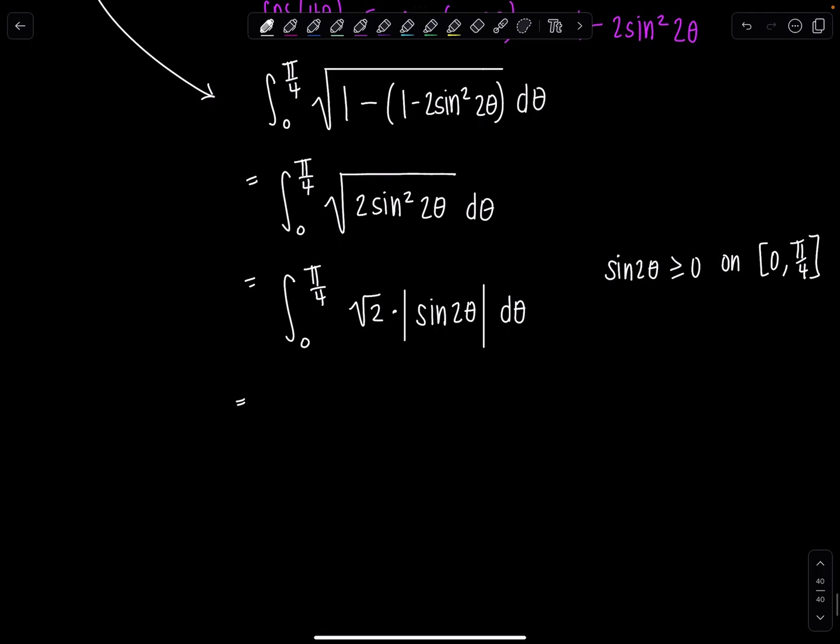Make mention of it because you want to distinguish yourself from the careless student who wouldn't even put the absolute value bars on. You know, it's like you're not writing them moving forward because you know you don't need to, not because you were careless. Let's take the √2 out of the integral. 0 to π/4. Sine 2θ dθ.